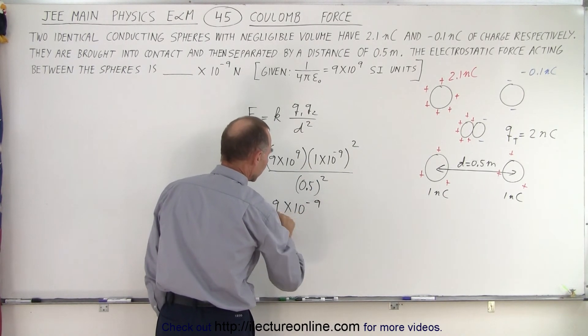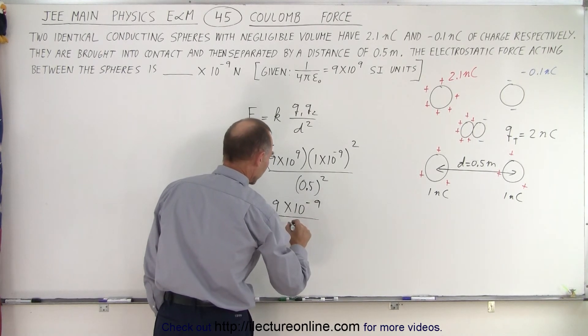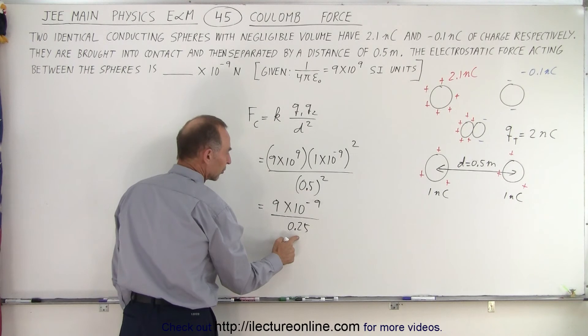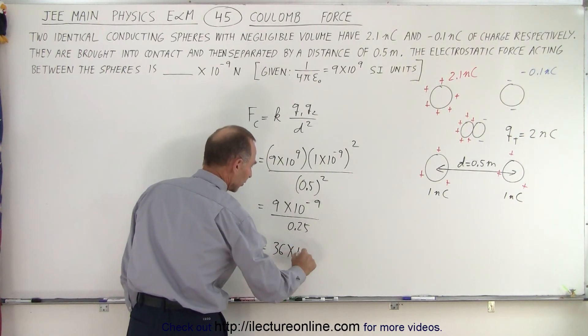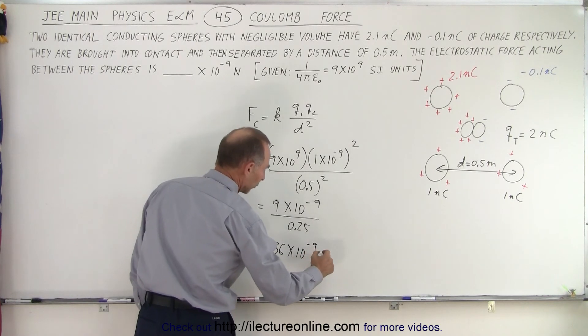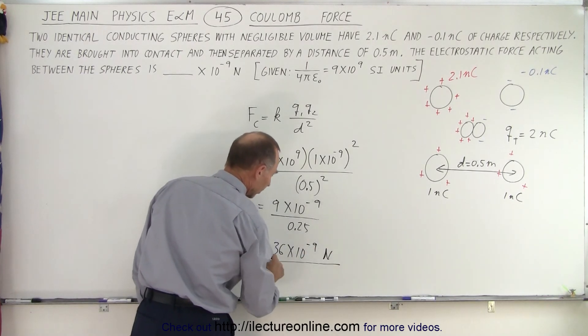9 divided by 0.25, well that's essentially 36. So this is 36 times 10 to the minus 9, and that would of course be in newtons.